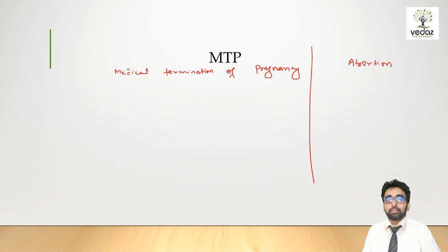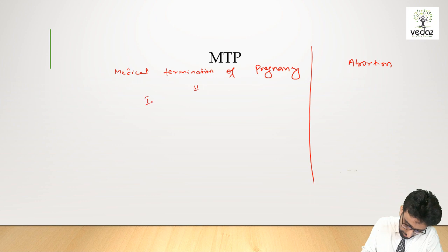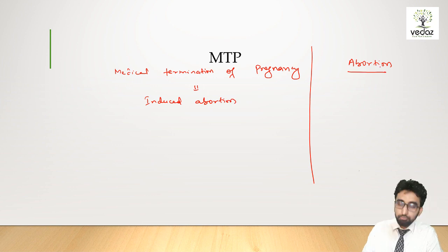Now, the first thing, what is the difference between MTP and abortion? Simple answer: MTP is nothing but induced abortion. It is induced abortion, whereas natural abortion happens due to genetic problems or issues naturally, not induced or medically induced.